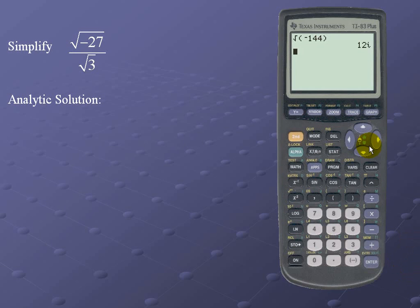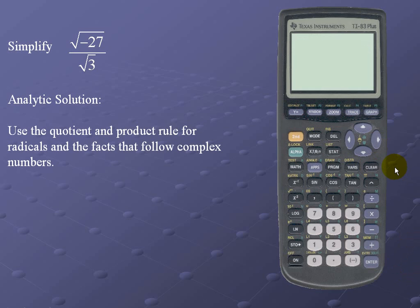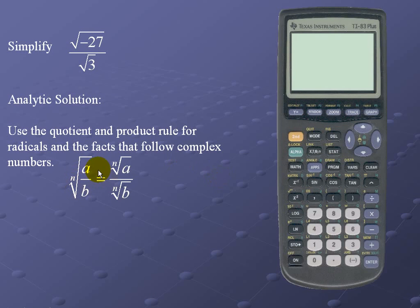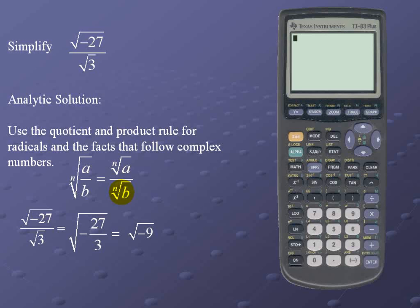Let's divide √(-27) by √3. Here's the analytic solution. We're going to use the quotient rule and the product rule for radicals, then use the facts that follow complex numbers. The quotient rule states that the nth root of (a/b) equals the nth root of a divided by the nth root of b. So for our example, √(-27) over √3 — we combine and simplify to get √(-9), then apply the product rule and the facts that follow complex numbers for a result of 3i.